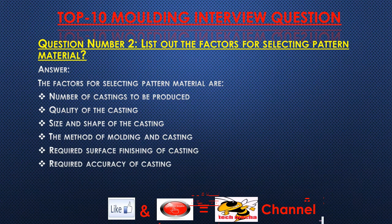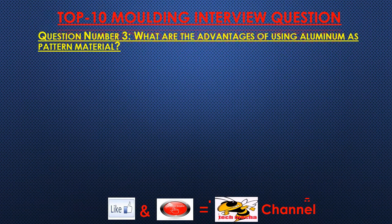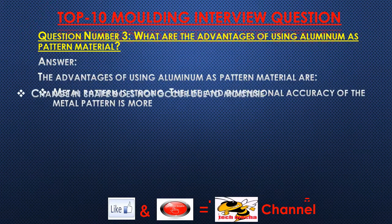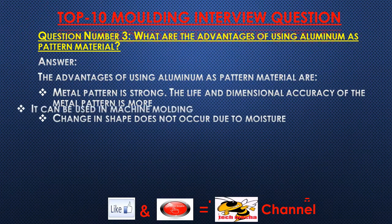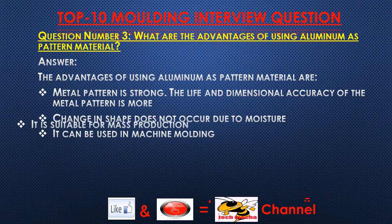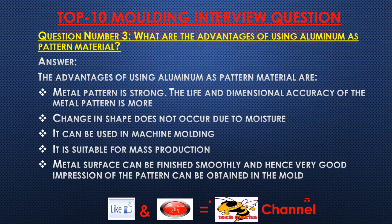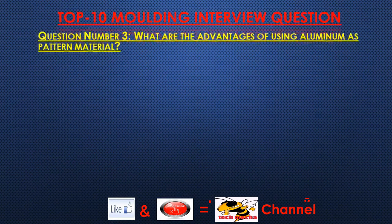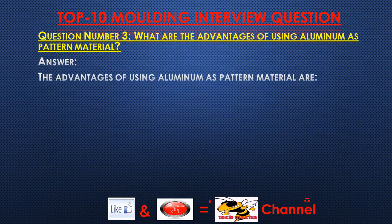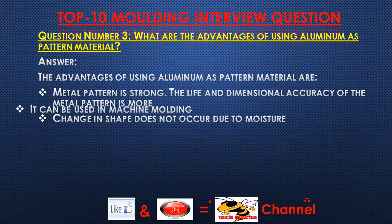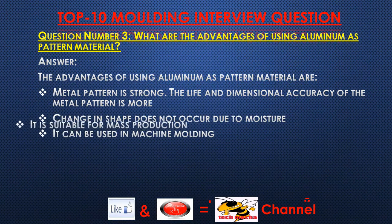Required surface finish is also a factor. Question number three: What are the advantages of using aluminum as pattern material? Answer: The advantages of using aluminum as pattern material are: the metal pattern is strong; the life and dimensional accuracy of the metal pattern is more; change in shape does not occur due to moisture; it can be used in machine molding; it is suitable for mass production; and the metal surface can be finished smoothly, giving a very good impression of the pattern in the mold.